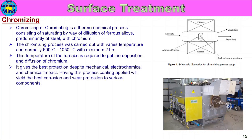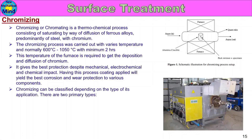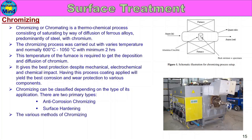This process gives the best protection against mechanical, electrochemical, and chemical impact. Having this coating applied yields the best corrosion and wear protection to various components. The various methods of chromizing are: pack coating, vapor paste coating, and chemical vapor deposition (CVD).